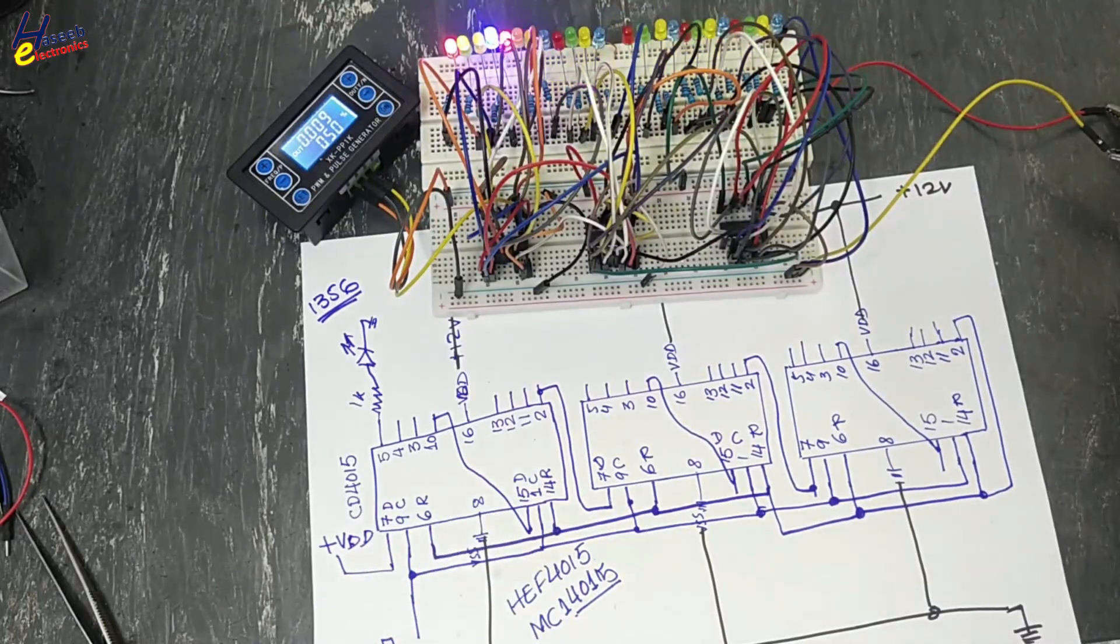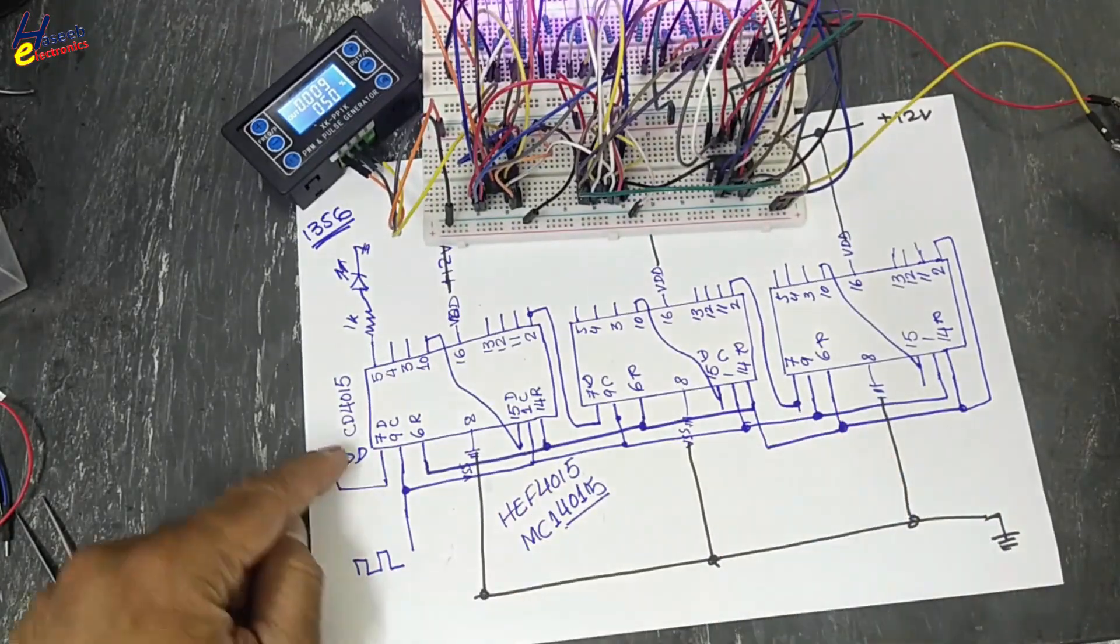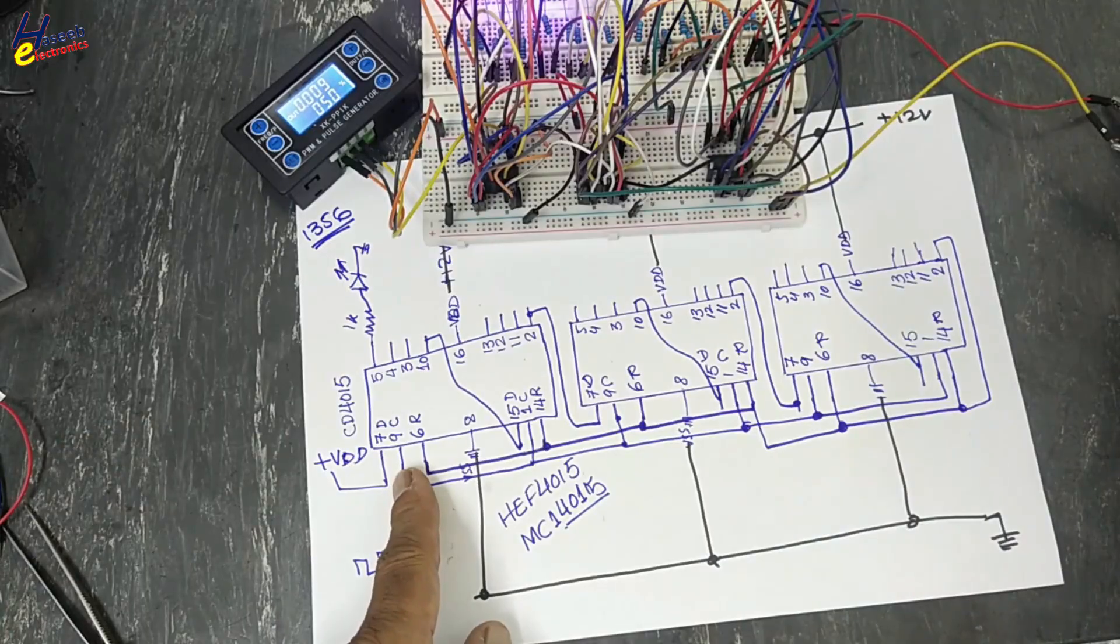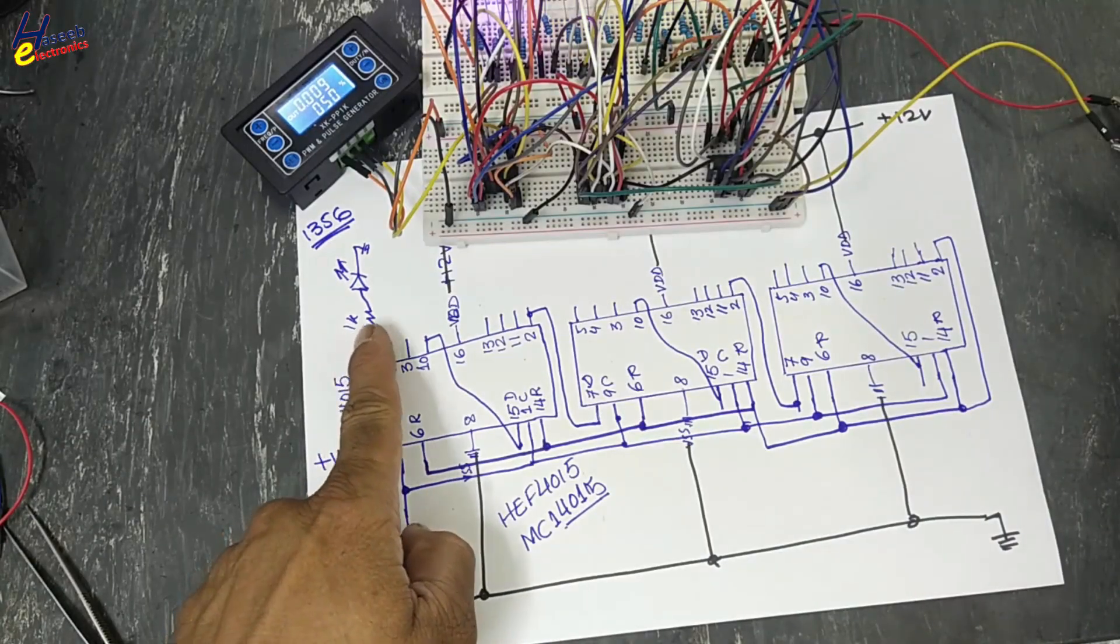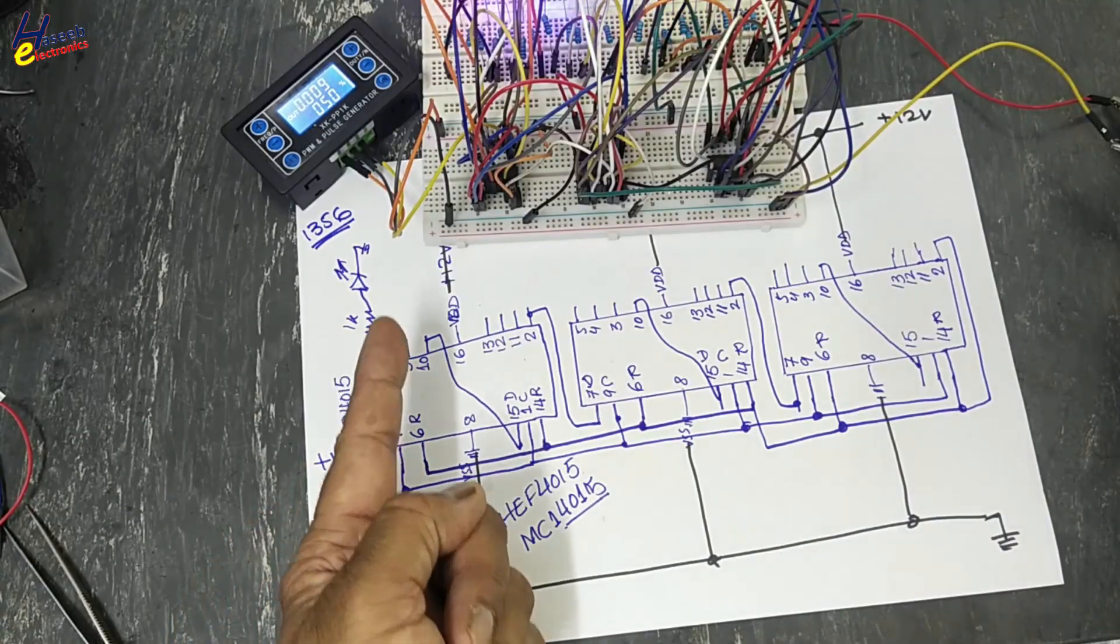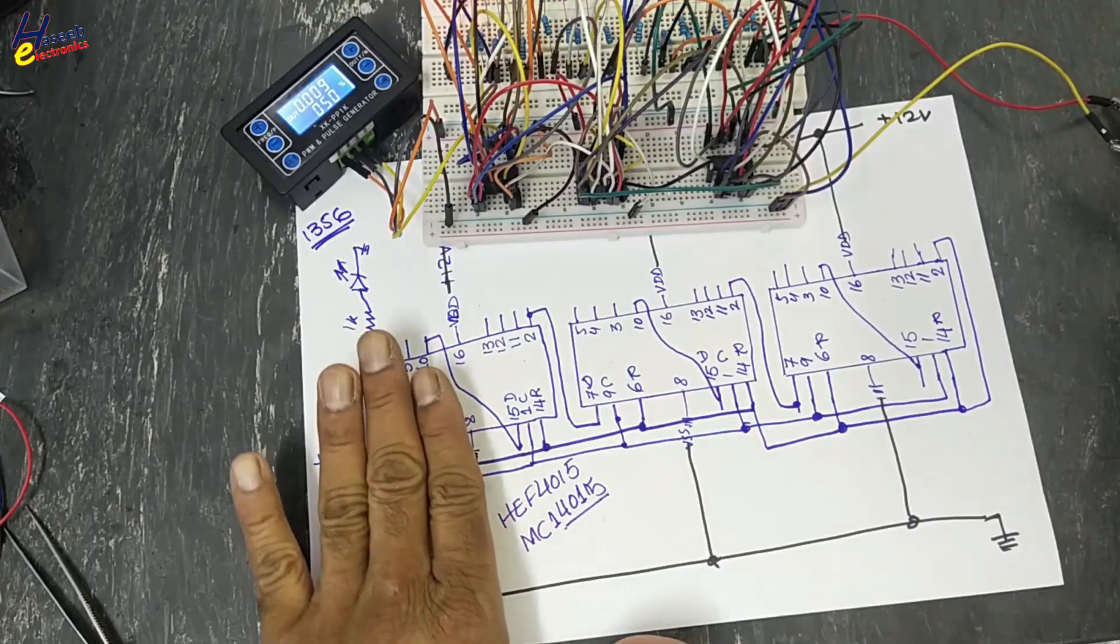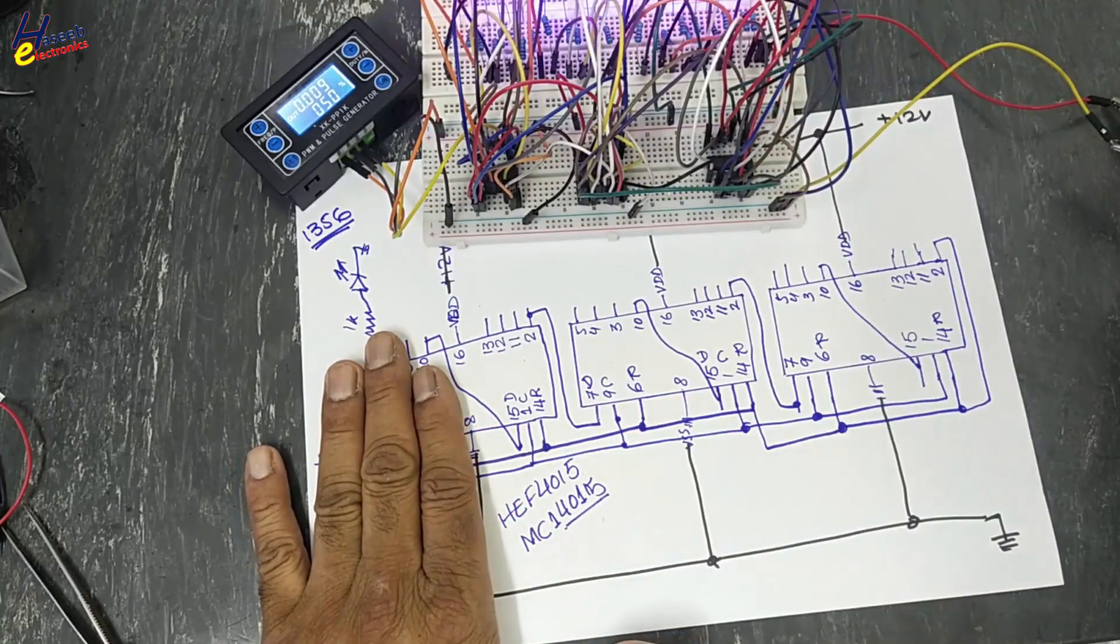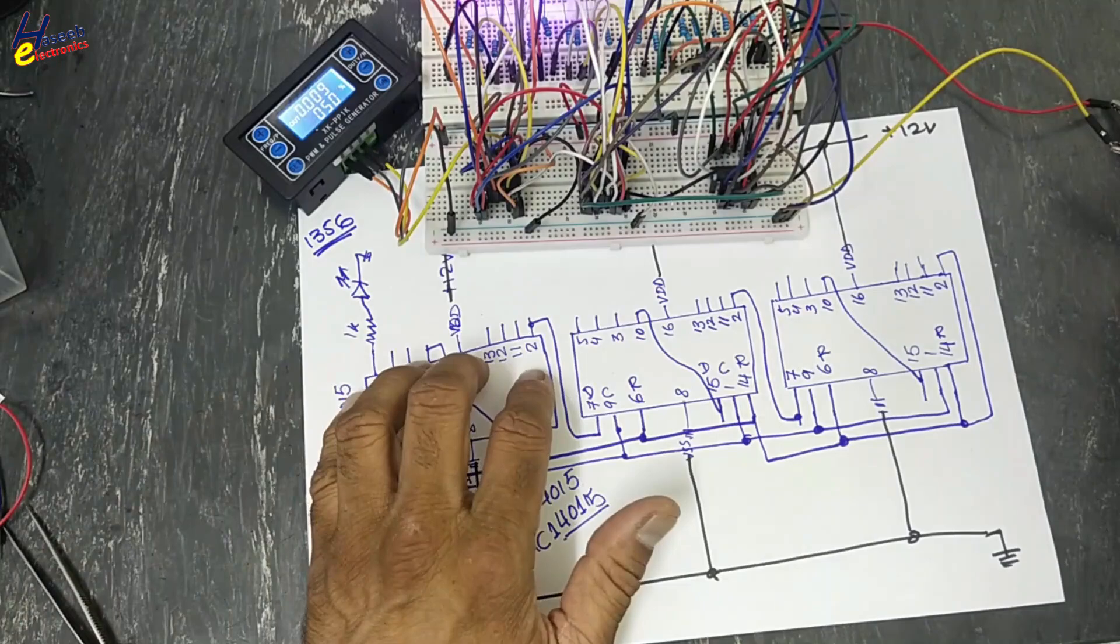So that data pin is high. At each clock pulse, it will fill one LED, next pulse, next register. It is four channel or four bit shift register. Serial in parallel out.